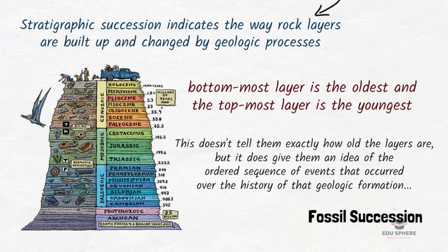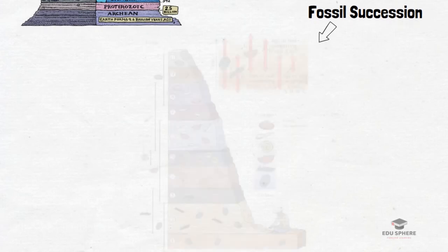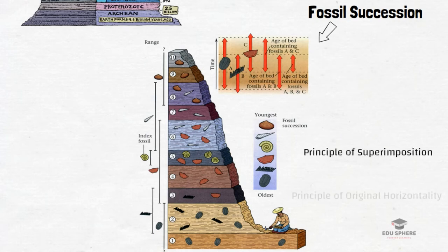Sort of an offshoot of Stratigraphic Succession is Fossil Succession — a method in which scientists compare different fossils in different rock strata to determine the relative ages of each of these fossils. This method of Stratigraphic Succession is primarily based on two principles: the principle of Superimposition and the principle of Original Horizontality.